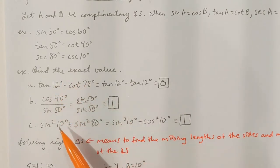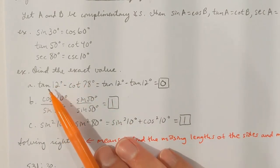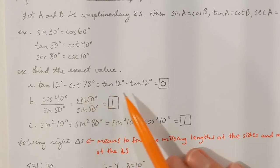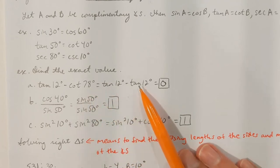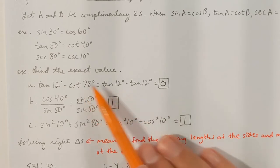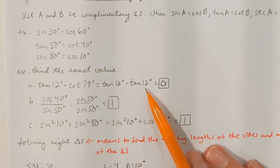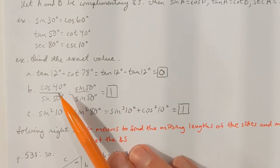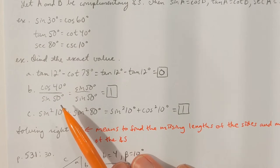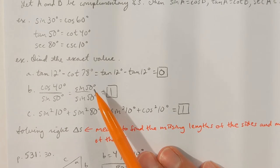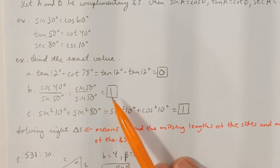Suppose we want to find some exact values. In part A, tangent of 12 degrees minus cotangent of 78 degrees. Cotangent of 78 degrees is the same number as tangent of 12 degrees, because 12 degrees and 78 degrees are complementary angles. Making that replacement, tangent of 12 degrees minus tangent of 12 degrees equals 0. In part B, cosine of 40 degrees divided by sine of 50 degrees — cosine of 40 degrees is the same as sine of 50 degrees, so dividing gives you 1.